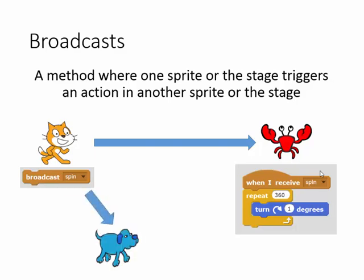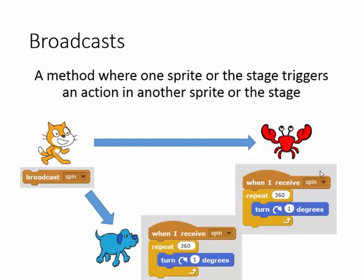It is of course possible for us to be broadcasting and the dog is picking up this same broadcast 'spin'. If it has no 'when I receive spin' inside the dog sprite, then nothing will happen, but it might be that the dog is doing the same thing and triggering multiple actions at the same time.